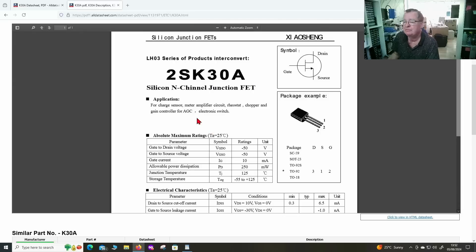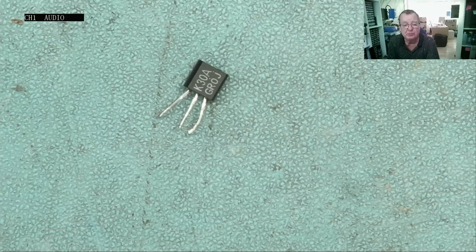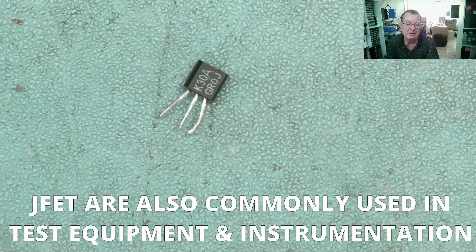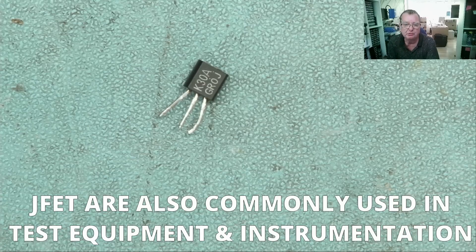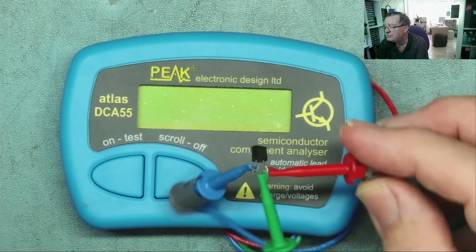And it tells us this can be used for a charge sensor, meter amplifier circuits, variable stat chopper, gain control for AGC, and electronic switch. In actual fact, probably the most common use for JFETs that I find is in audio amplifiers, where they are, in actual fact, used as a switcher. So they're used to switch the audio signal to switch an audio path on or off.